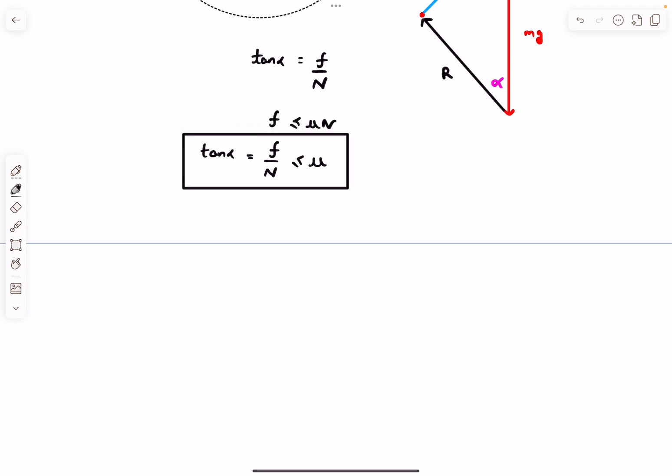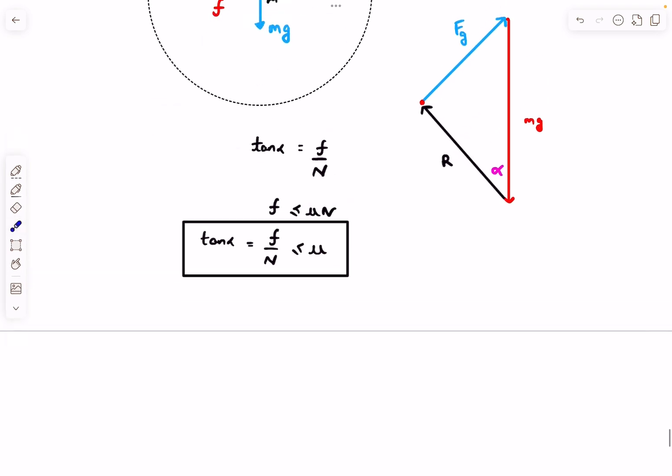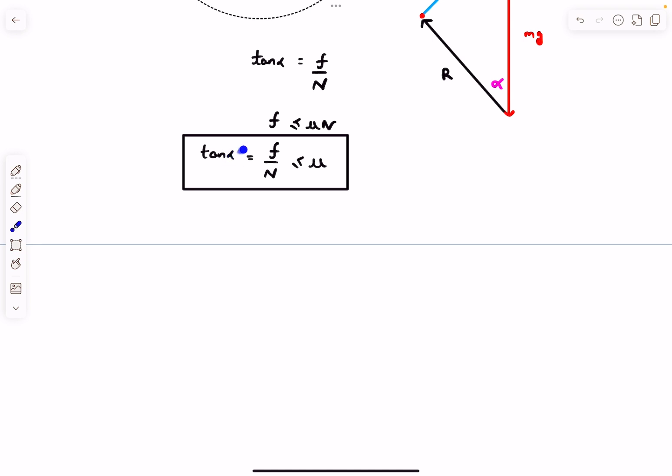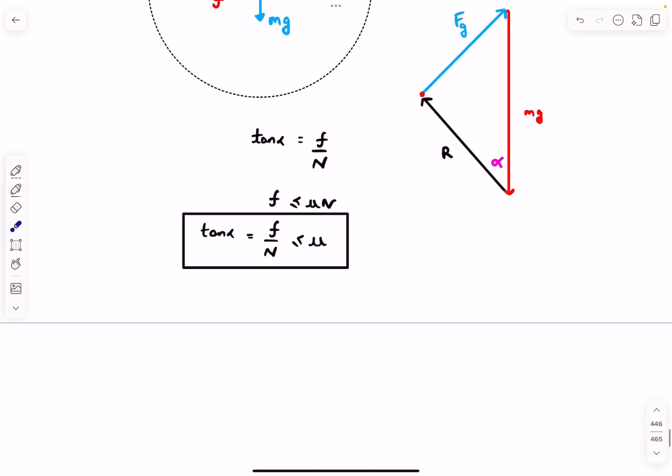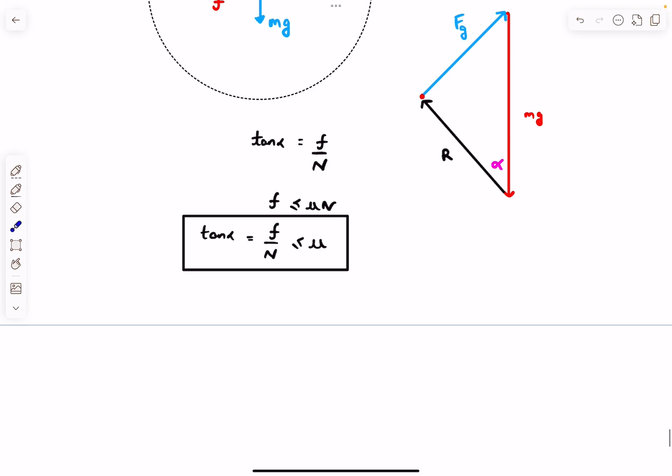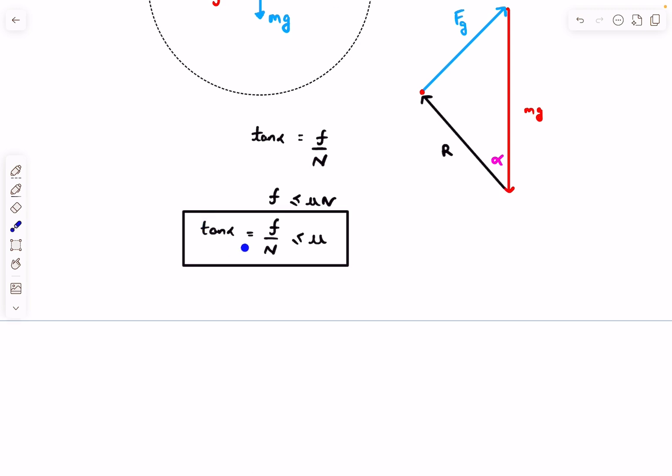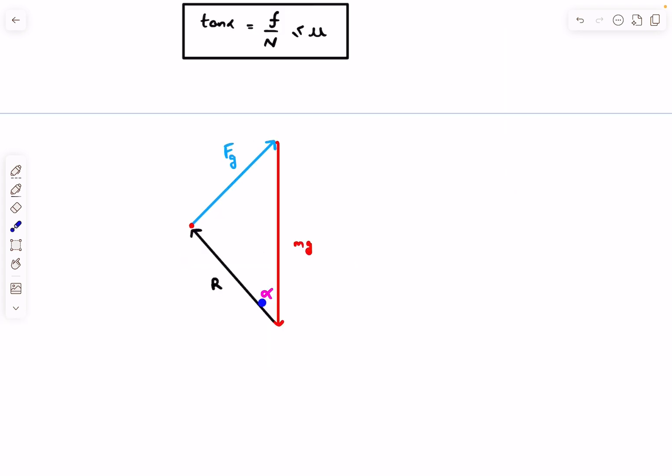Alpha should be an angle that satisfies this relation. If alpha is greater than tan inverse of μ, that means the friction force is greater than μN, which is not physically true. We have an idea of the maximum value of angle alpha, so now we have something to work with. We know the maximum value that angle alpha can take. We have to look at these three vectors and try to maximize the value of alpha.